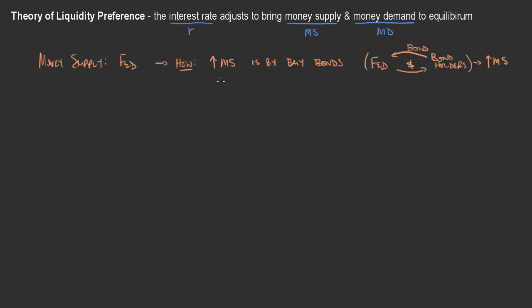The exact opposite is true if they wanted to decrease the money supply — they could do that by selling bonds. Individuals who purchase those bonds would be paying money to the Federal Reserve, taking dollars out of the money supply. There are a few other ways the Federal Reserve can change the money supply, such as changing the discount rate — the rate at which the Federal Reserve lends directly to banks — which would increase or decrease the amount of lending and therefore the money supply.